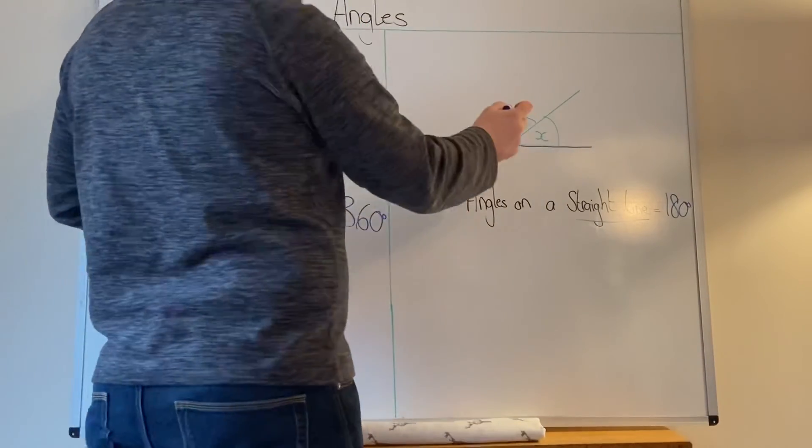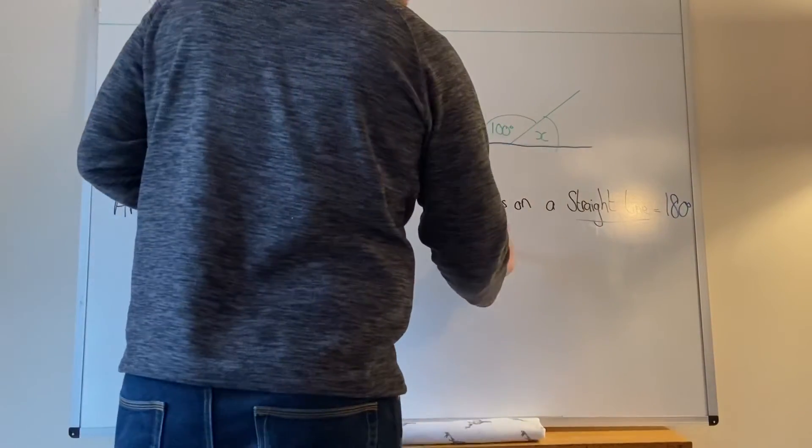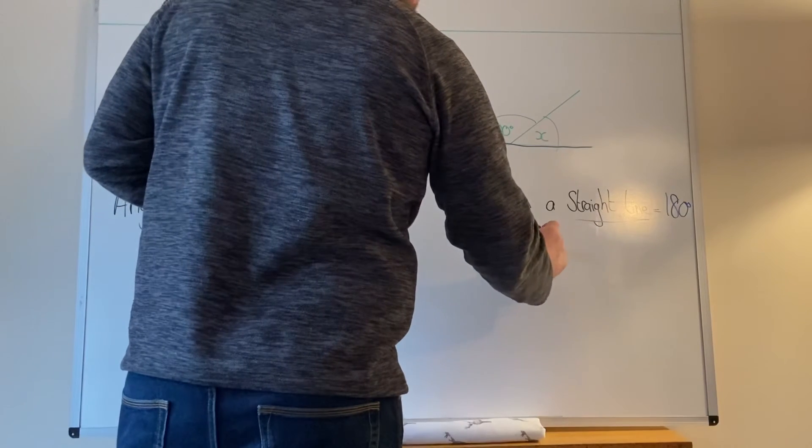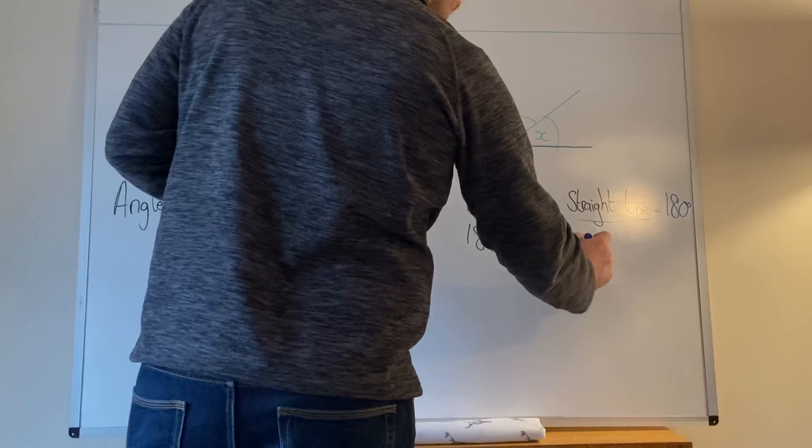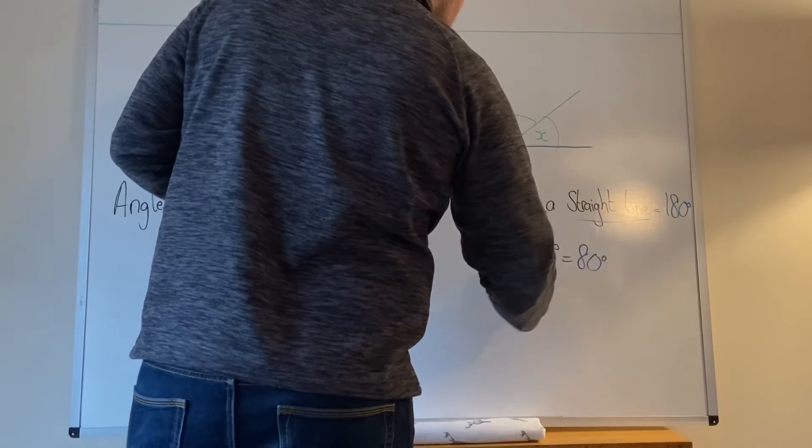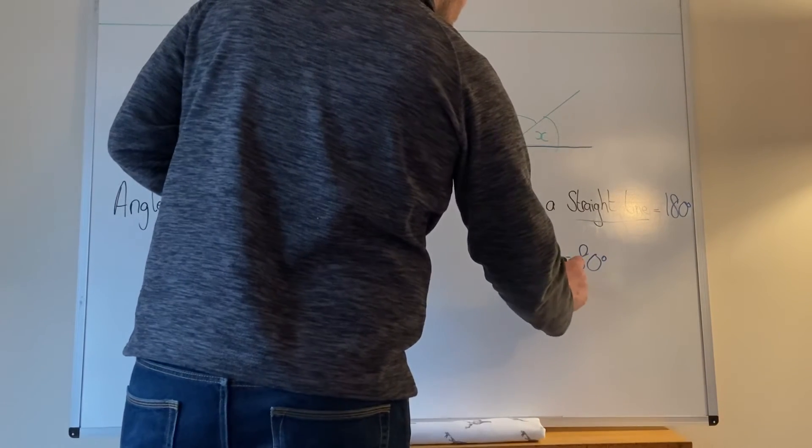So we need to work out what x is. We're going to do 180 minus 100. Now we should also have degrees in there as well. And that equals 80 degrees. So x is 80 degrees.